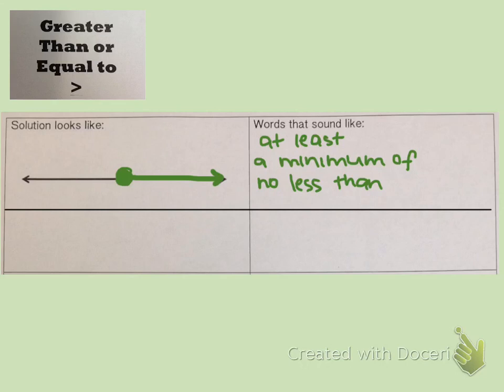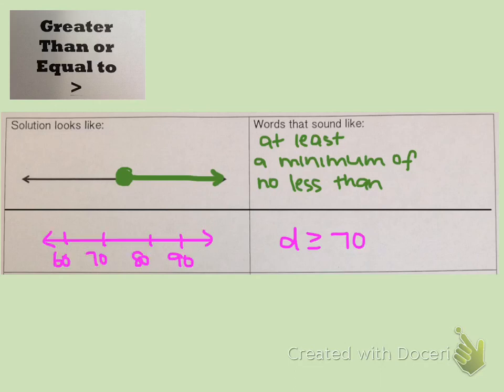Let's see what this looks like with an actual inequality. We have d is greater than or equal to 70. I chose to label my number line counting by tens — that's just a personal choice. Because it says greater than or equal to, that means we do include 70, so we draw a closed dot on the 70. Then greater than is everything to the right of the 70. That is how it will look on a number line.